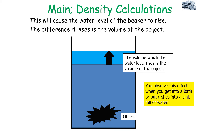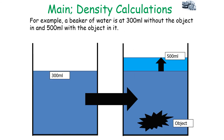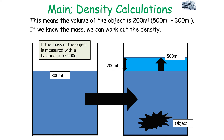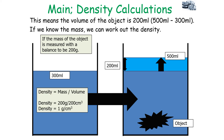You observe this effect in everyday life when you get into a bath or put dishes into a sink full of water and the water level rises. For example, if we had a beaker of water at 300 millilitres, we place an object in it and the water level rises to 500 millilitres. The difference is 200 millilitres, so that is the volume of our object. If the mass of the object was measured as 200 grams, then density equals 200 grams over 200 centimetres cubed, giving a density of 1 gram per centimetre cubed.